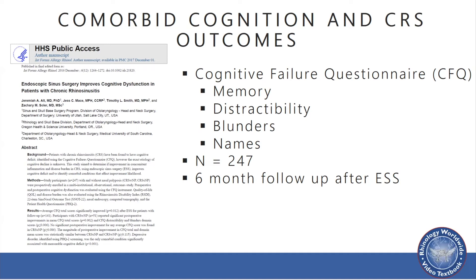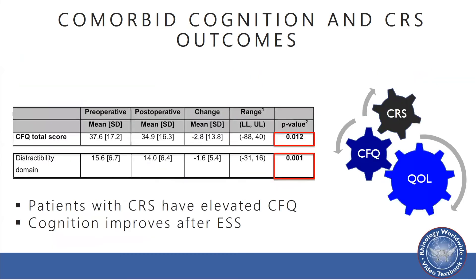Patients with CRS had previously published elevated cognitive declines on the CFQ, and the CFQ improved following endoscopic sinus surgery, shown here in the CFQ total score. Among the domains of the CFQ, the key distractibility domain was found to be significantly improved following endoscopic sinus surgery in patients with CRS, with the others trending towards significance.